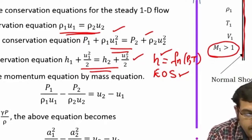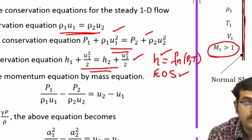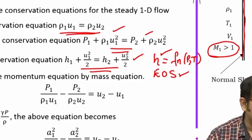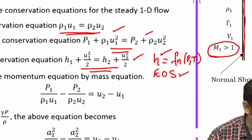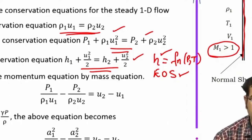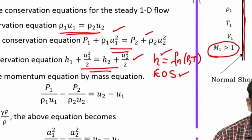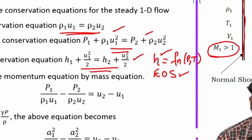This general form can be applied even when Cp changes and the gas is not calorically perfect, but then you may not get closed-form solutions. For this class we will seek closed-form solutions to understand the nature of normal shocks and how they behave with changes in Mach number. We will take the assumption of a calorically perfect gas and go through the steps to relate various quantities — first, relating the downstream Mach number M₂ to the upstream Mach number M₁.